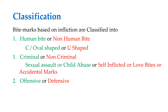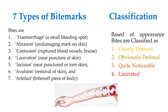Love bites or accidental marks can be seen in non-criminal categories. Bite marks can also be offensive or defensive — for defensive purposes a person may bite another person, while offensive bite marks are associated with sexual assault or other offending behaviors. There are seven types of bite marks classified according to their appearance and the degree of injury inflicted.